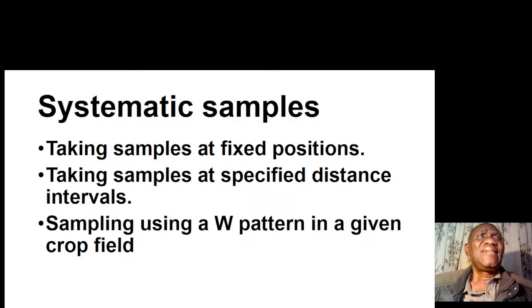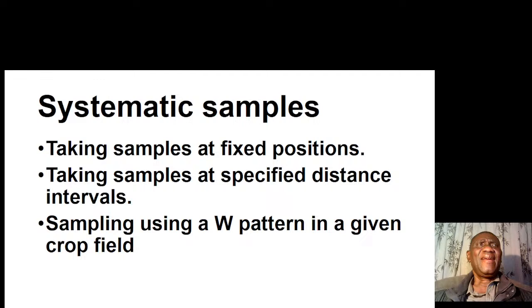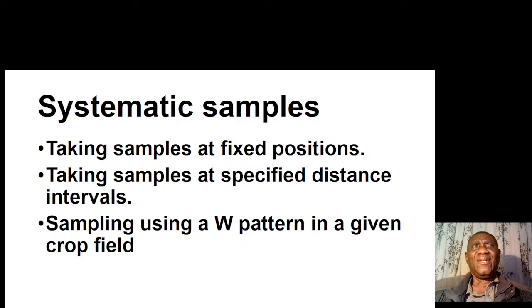For systematic sampling, which is commonly used, you take your samples at fixed positions — at a specified distance interval. You can also use a W pattern or a zigzag pattern in a given crop field so that you capture a representative sample. These are sampling techniques to get reliable information.